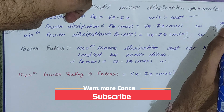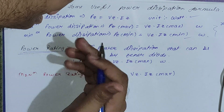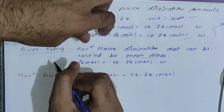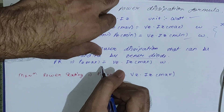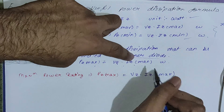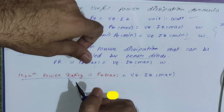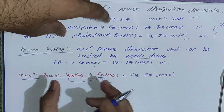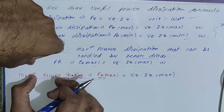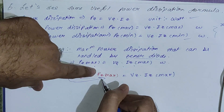For power rating: power rating is the maximum power dissipation that can be handled by the Zener diode. So power rating = Pz_max = Vz × Iz_max. In some questions, you may see the term 'minimum power rating' — this still refers to the maximum power dissipation the Zener must be able to handle, so the formula used is the same: Pz_max = Vz × Iz_max.